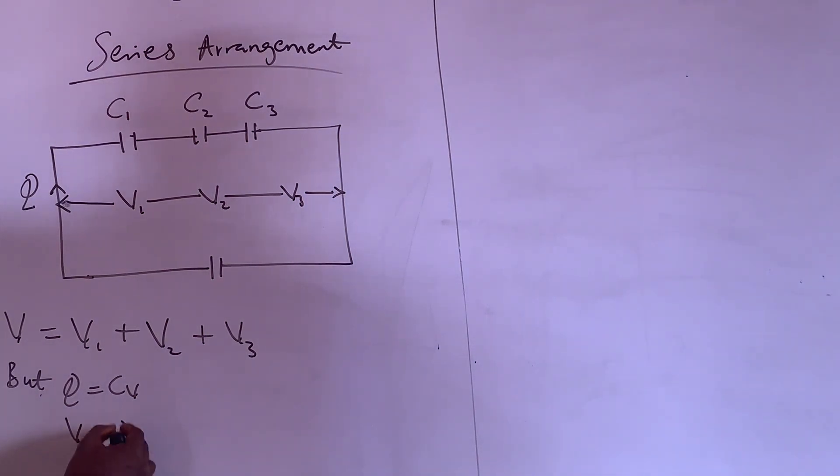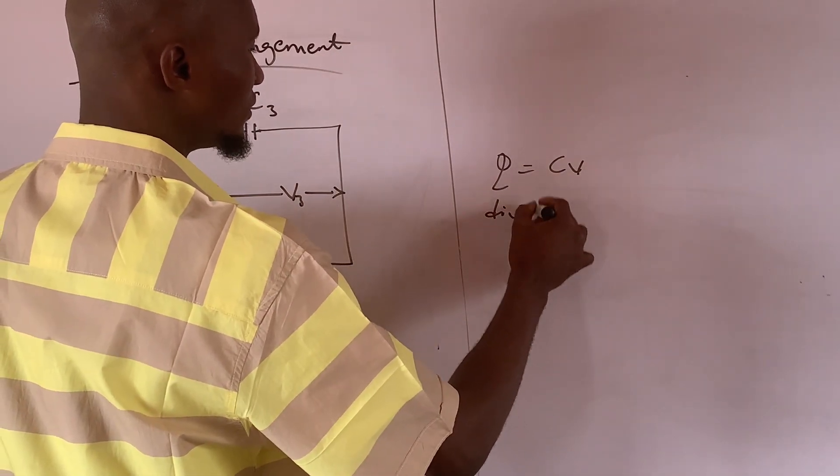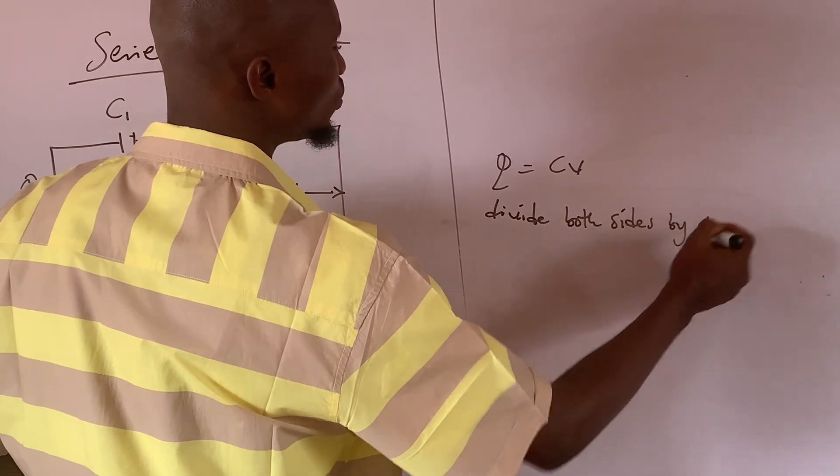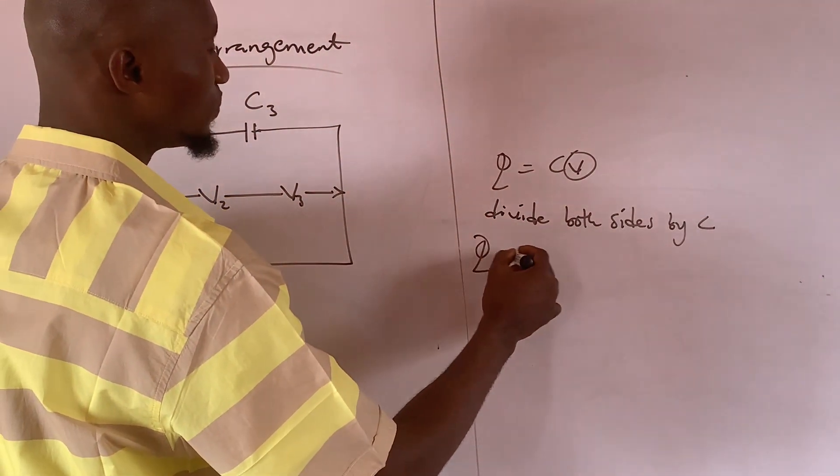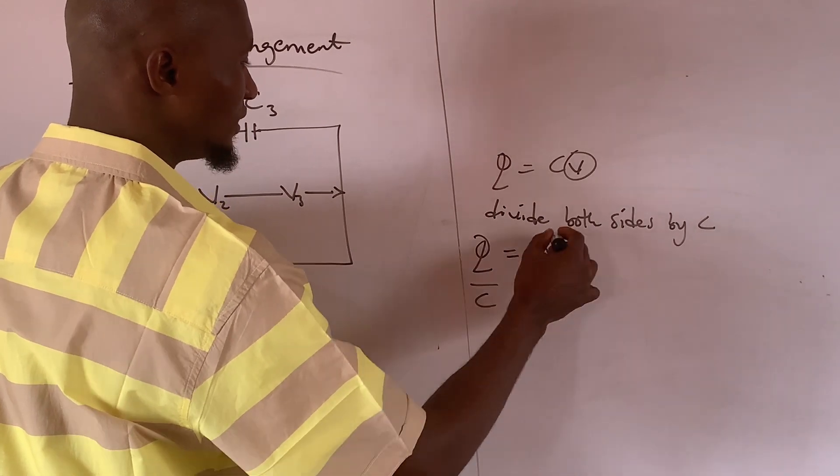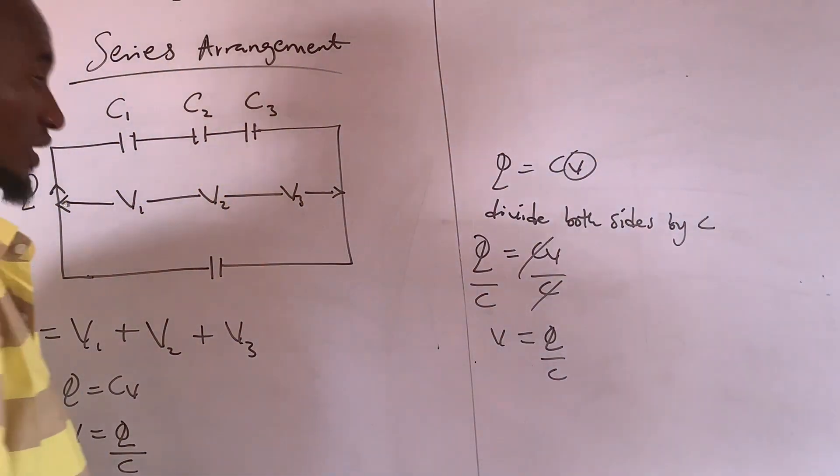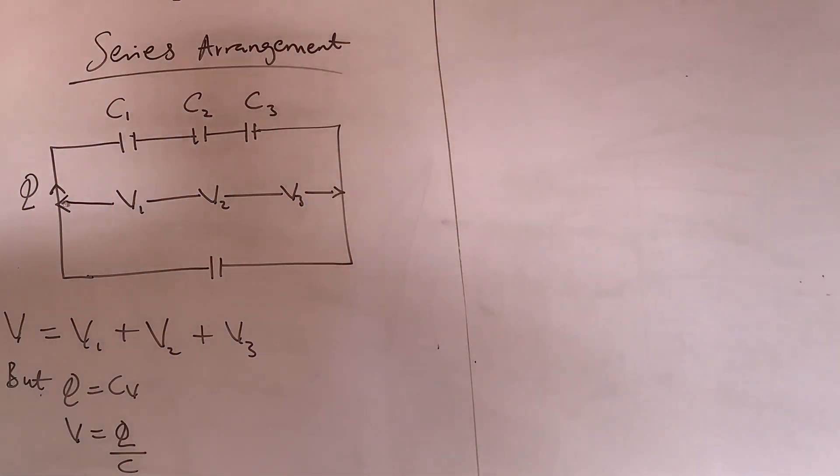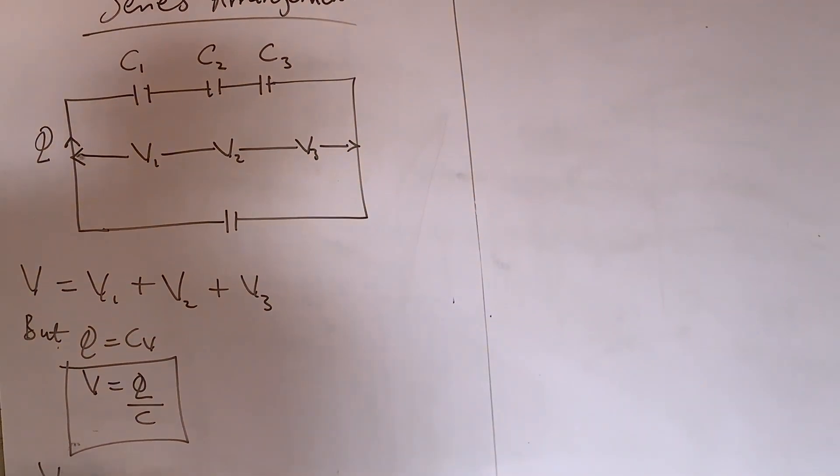But Q is equal to CV. When you make V subject of formula, that means you divide both sides by C. When you divide both sides by C, you're going to have V is equal to Q over C. What do I mean? Q equals to CV. We divide both sides by C. To make V subject of formula, it's going to be Q equals to CV over C, over C. I believe you understand that. You understood it? Good.